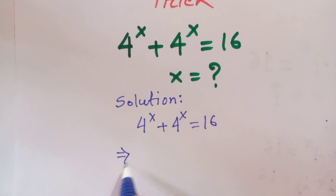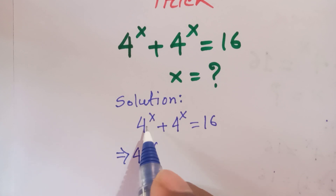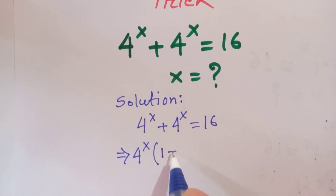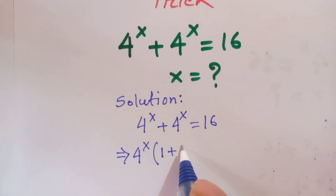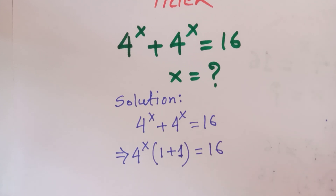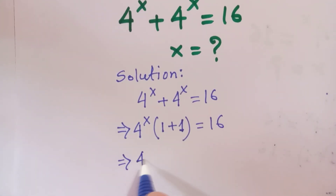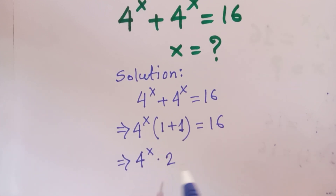Firstly we can take 4 to the 4x in common. So 4 to the 4x outside the bracket, and this 4 to the 4x divided by 4 to the 4x will be 1, plus again 4 to the 4x divided by 4 to the 4x will be 1. So 4 to the 4x times (1 plus 1), which gives 4 to the 4x times 2.